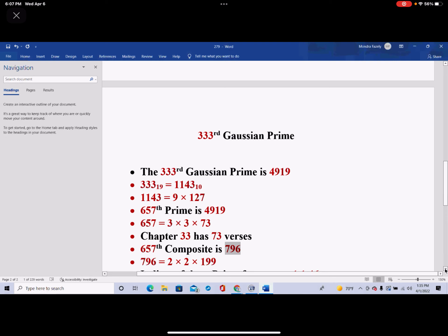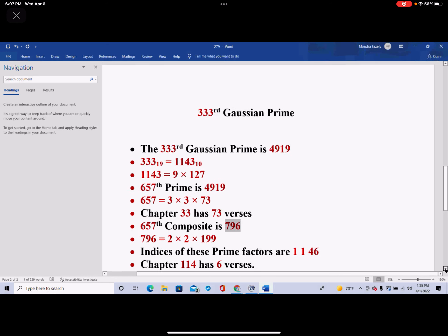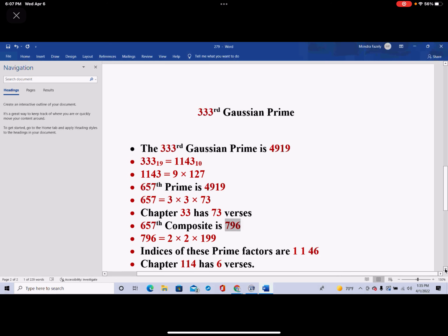And indices of these prime factors are 1, 1, 4, 6, and we know that chapter 114 in the Quran has 6 verses. So we generated another surah with this number of verses.